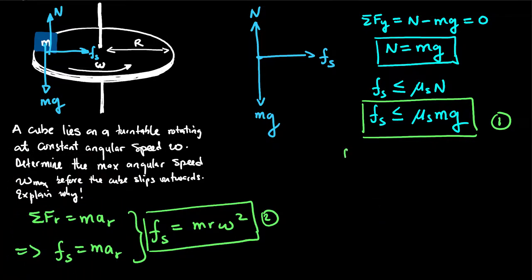From equation 1, f of s has a maximum value that it can attain. f of s has a maximum value that it can attain. And that maximum value is given by mu s mg.